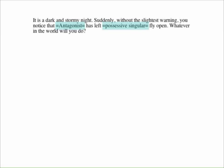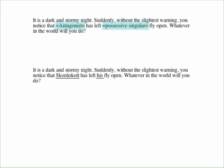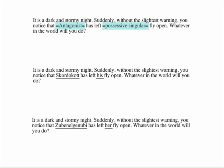For example, if Scordicott is the Antagonist, then the text will look like this. But if Zubinal Genubi is the Antagonist, then the text will look like this.